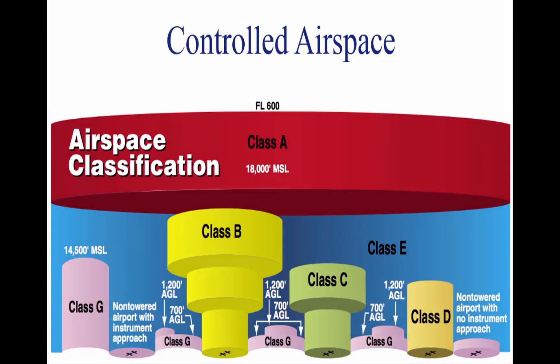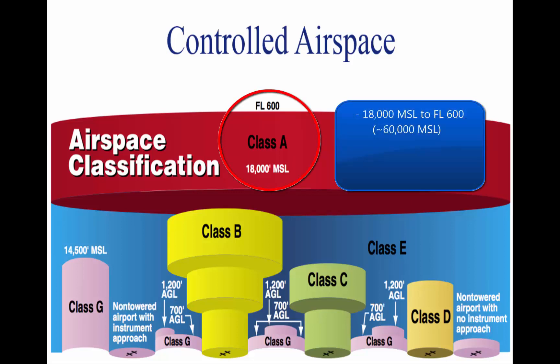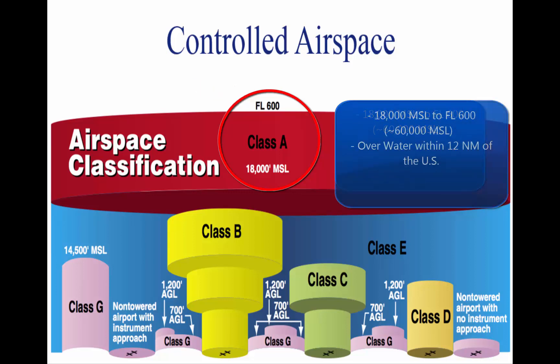Controlled airspace is the generic term that covers the different classifications of airspace and dimensions within which air traffic control services are provided. Controlled airspaces range from Class A to Class E. Class A airspace is generally the air from 18,000 feet above sea level up to flight level 600, or 60,000 feet, and anywhere over water within 12 nautical miles of the U.S. Unless otherwise authorized, all flights in Class A airspace are conducted under instrument flight rules, or IFR.